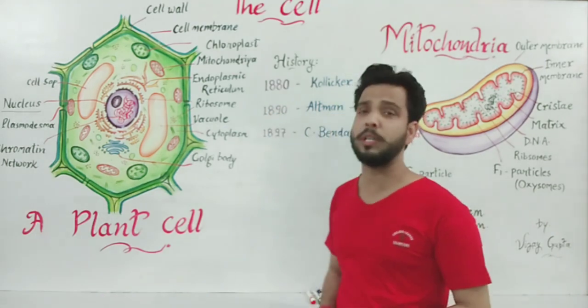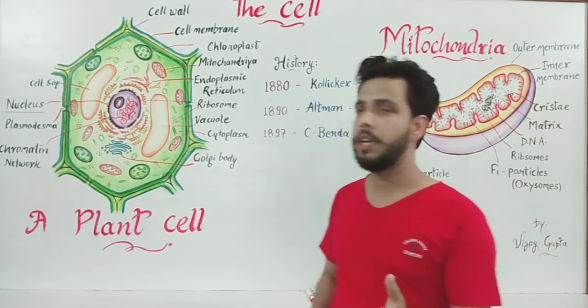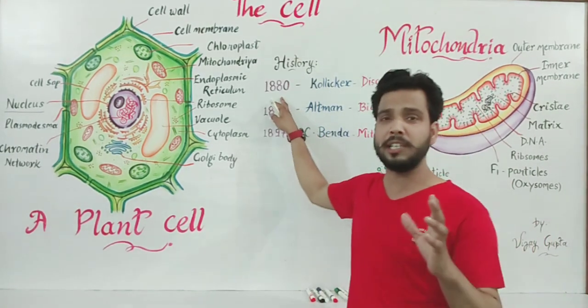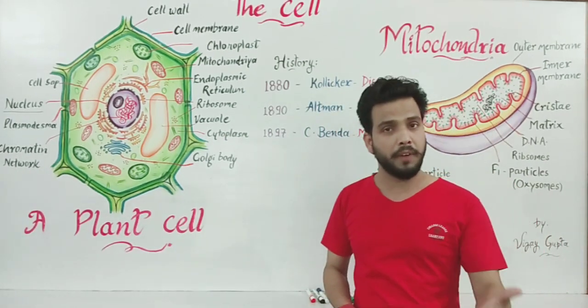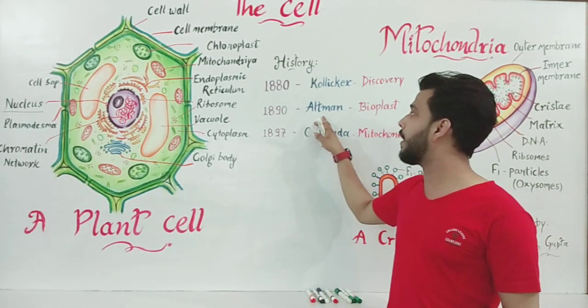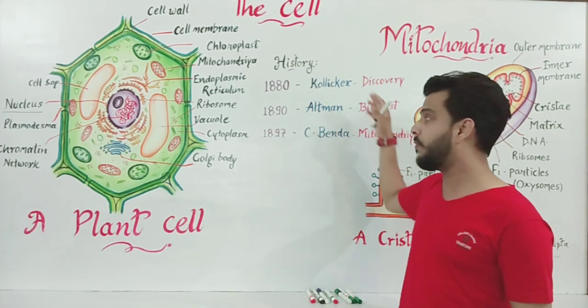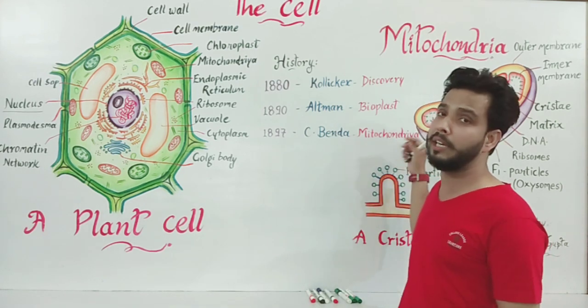If we see the history of mitochondria, then there are three scientists which contribute in the discovery of mitochondria. At first, in 1880, a scientist Koliker discovered the mitochondria first. After that, a scientist Altman in 1890 gave the name Bioplast and finally in 1897, C. Bender proposed the name mitochondria.